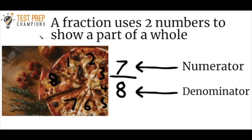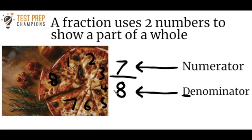What is a fraction? A fraction uses two numbers to show a part of a whole. In this example we see the fraction 7/8 — seven over eight. The top number is what we call the numerator, which here is 7. The bottom number is what we call the denominator, which here is 8. One way to remember this: both 'downstairs' and 'denominator' start with the letter D, so you can think of the denominator as being downstairs. The denominator tells you how many equal parts there are in the whole, and the numerator tells you how many parts of the whole you're working with.